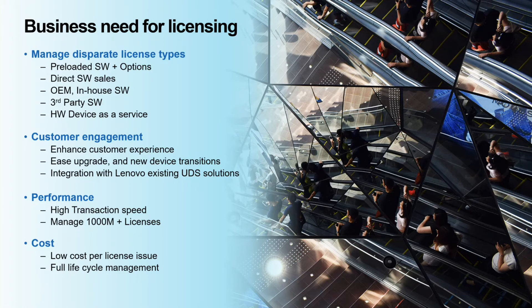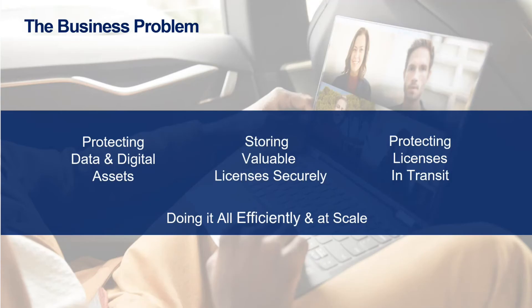We need very low cost per license issue and full-cycle life management so we can manage licenses from creation to sale to resale to transfer, enabling corporations to manage licenses through their day-to-day business. This led to several categories of efficiencies we needed to overcome. We need to protect licenses and associated data, adhering to privacy requirements, storing licenses securely, and ensuring encryption both in-flight and at rest, all at scale.